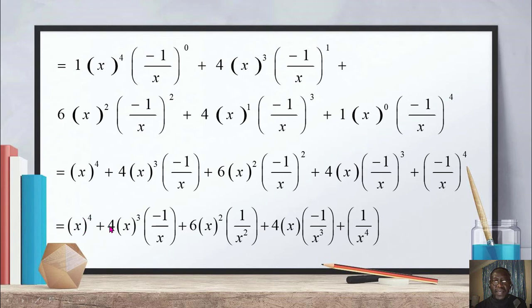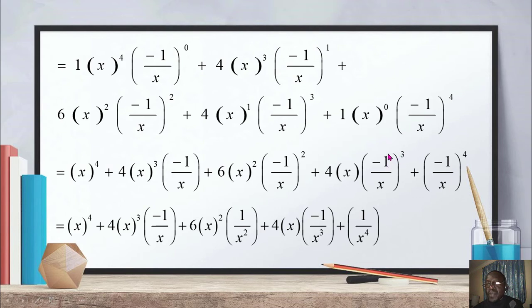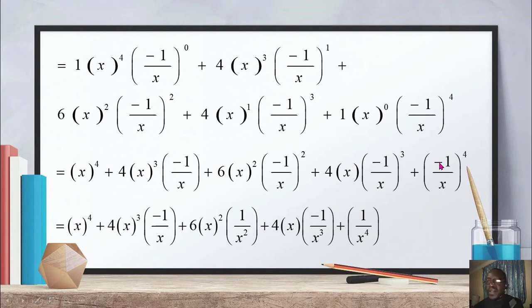On the third term, minus 1 raised to power 2 gives minus 1 times minus 1, which equals positive 1, and x is raised to power 2. On the fourth term, minus 1 raised to power 3 gives minus 1 times minus 1 times minus 1, which equals minus 1, and x is raised to power 3. On the fifth term, minus 1 raised to power 4 gives positive 1, and x is raised to power 4.